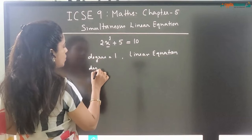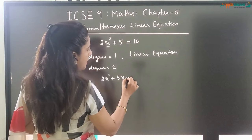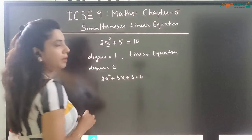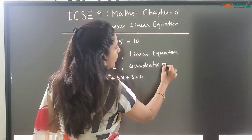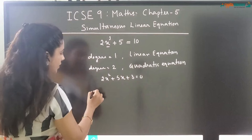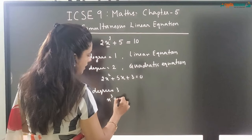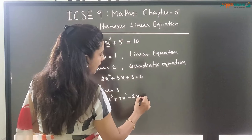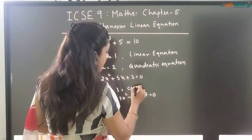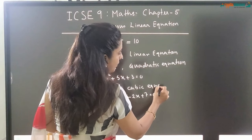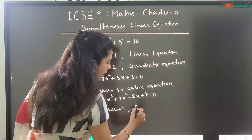If the degree of the equation is 2, for example you have 2x squared plus 5x plus 3 equal to 0 — here the degree is 2 and this type of equation is called a quadratic equation. If the degree is 3, for example x cubed plus 3x squared minus 2x plus 7 equal to 0 — this equation has degree 3 and is called a cubic equation. And if the degree of the equation is 4, then we call it a biquadratic equation.